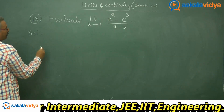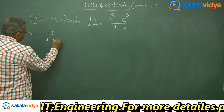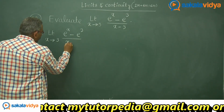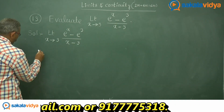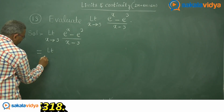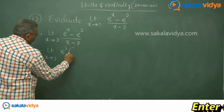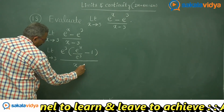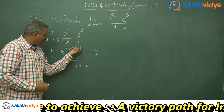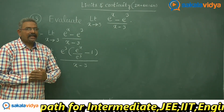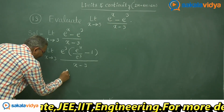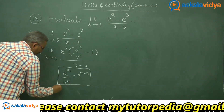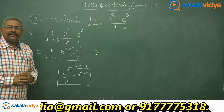Solution: limit x tends to 3, e power x minus e cube upon x minus 3. First, let us take out e cube common. If we take e cube common, we get limit x tends to 3: e cube common, and we have e power x by e cube minus 1 upon x minus 3. One of the theory of indices formulae has to be recalled: a power m by a power n equals to a power m minus n.